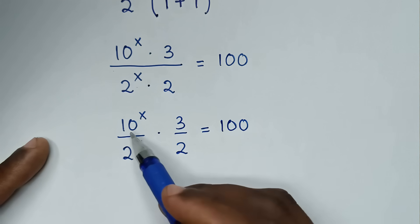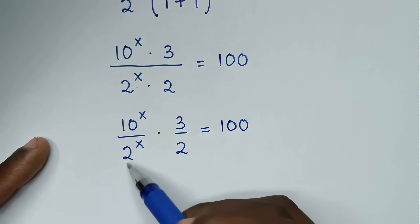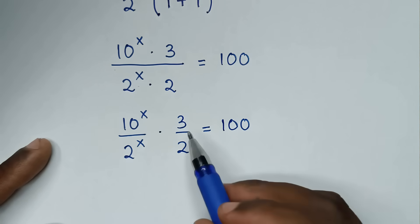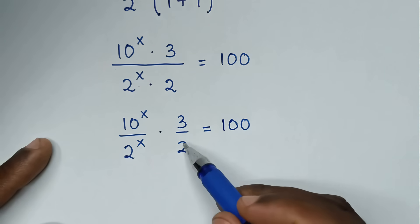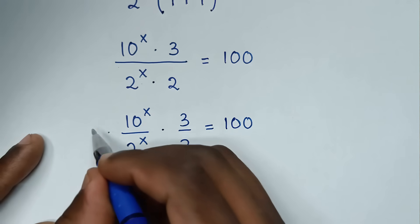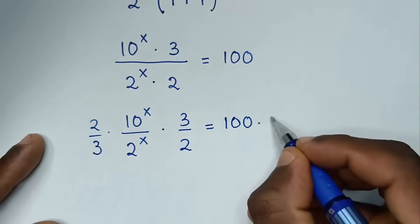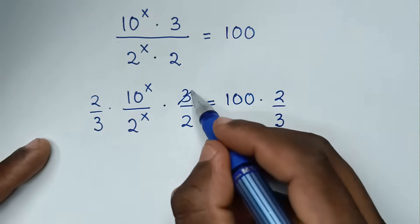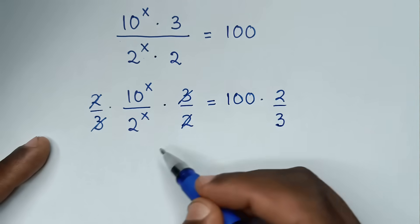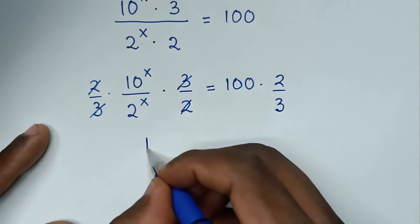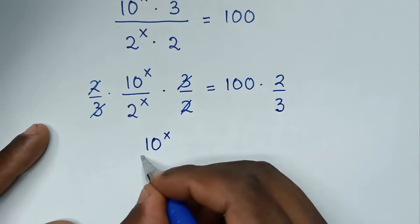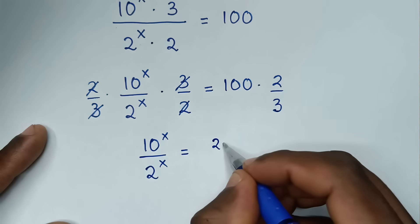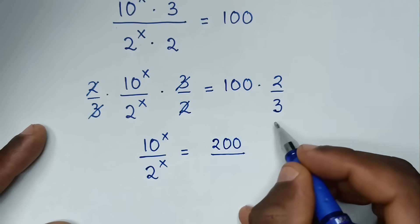Then in the next step, we'll place the like terms with powers of x together. We'll take 3 over 2 to the other side by multiplying by the reciprocal, which is 2 over 3, in both sides. So 3 will cancel 3, and 2 will cancel 2. Therefore 10 power x over 2 power x is equal to 100 times 2, which is 200 over 3.